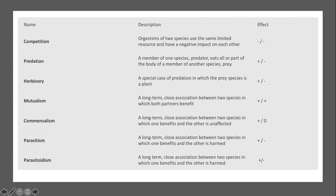Here's a quick summary of what we're going to go over today. We'll cover each interaction in definitional form with one example each, and then on Friday the next lecture will go more in depth with a whole bunch of different examples. We'll start with competition, then go into predation, herbivory, mutualism, commensalism, parasitism, and something called parasitoidism.